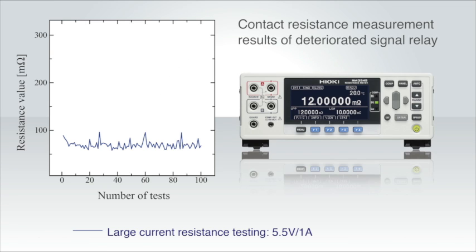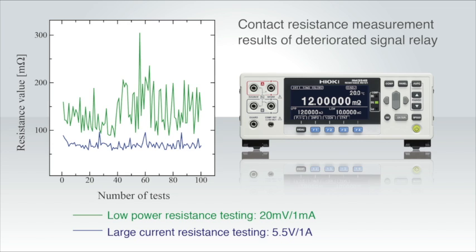Let's compare the measurement results from low power testing and large current testing. These are the results of using a large current to take the measurement. Now let's overlay these results with those taken from low power testing. As you can see, you can obtain higher resistance values using the low power resistance testing method. You can also clearly see the instability